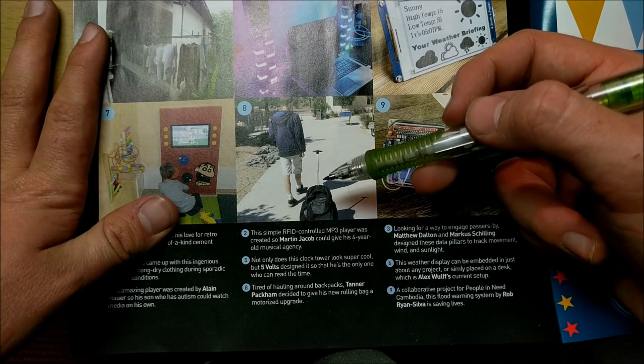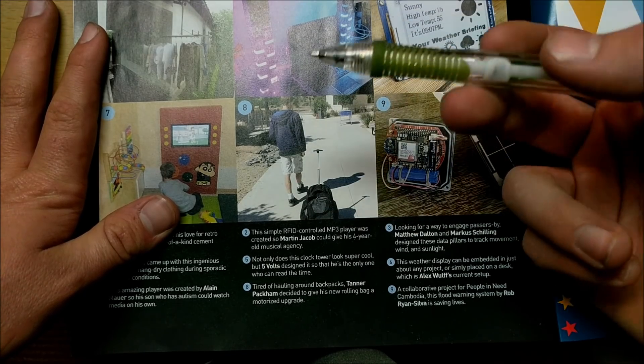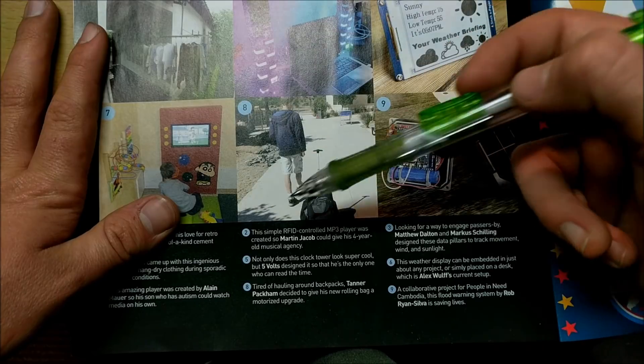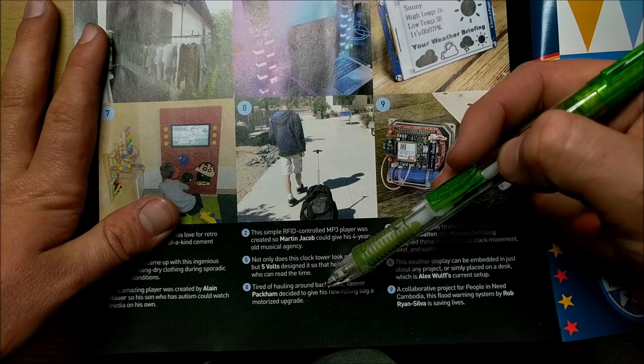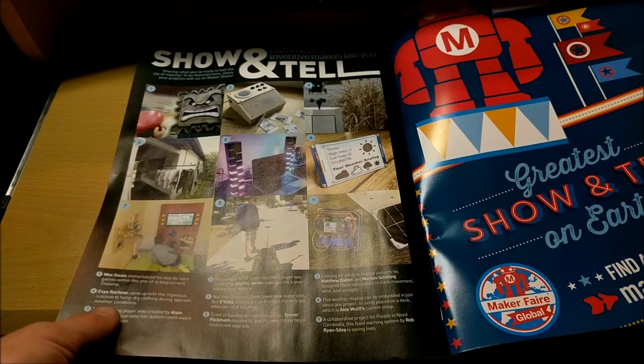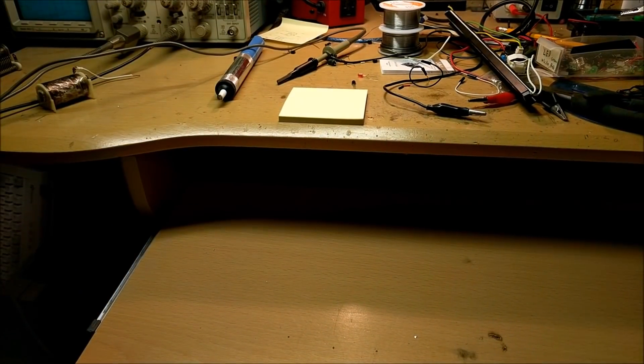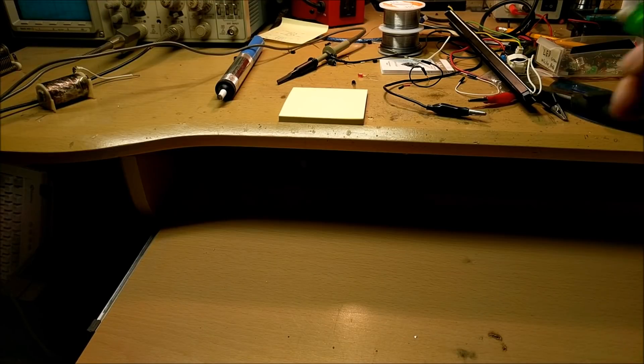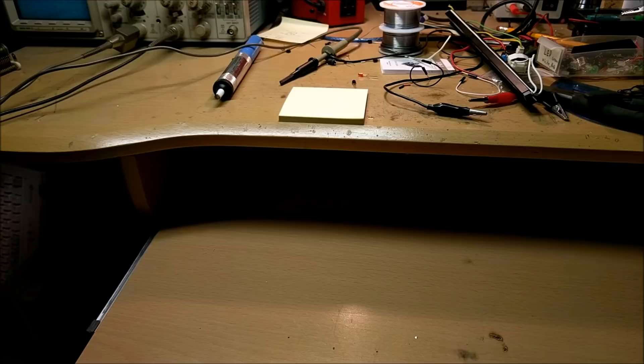Make Magazine demonstrates projects that people build themselves. As you can see here, it shows my project: Tanner Packham and his rolling bag motorized upgrade. Now let's get to the original topic of this video—measuring the frequency of different high voltage sources with my oscilloscope.